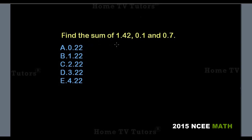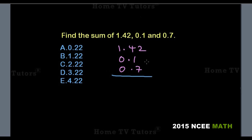Find the sum of these decimal numbers. So we have 1.42 plus 0.1 plus 0.7. Adding this up from the column on the far right-hand side of the decimal point, we bring down the 2. Then in the next column, we have 4 plus 1 which is 5, then 5 plus 7 which is 12.